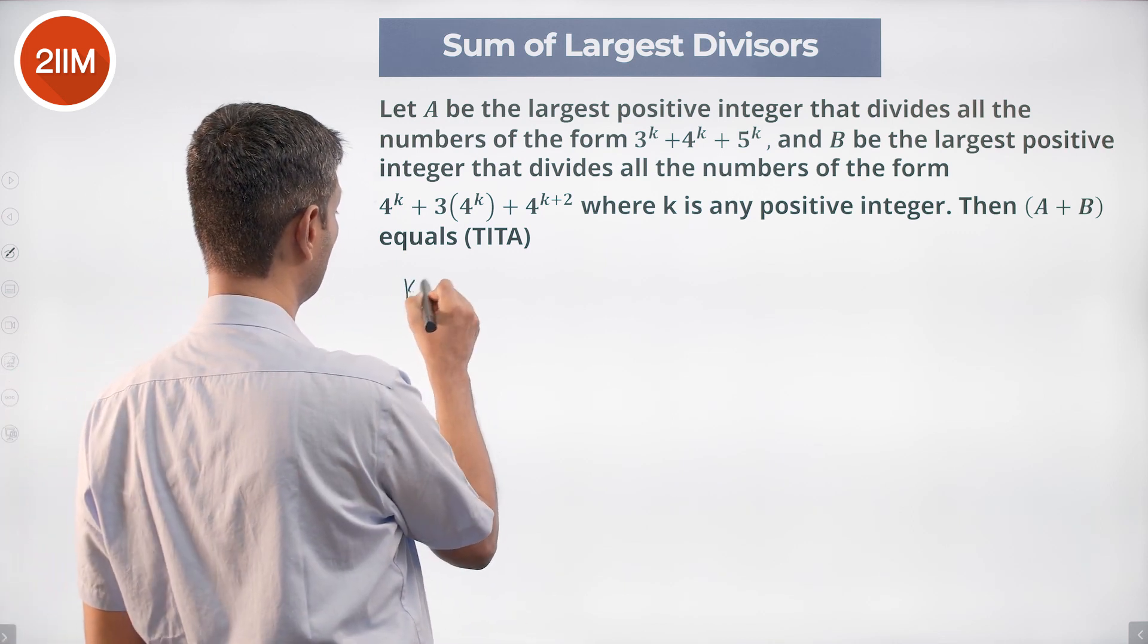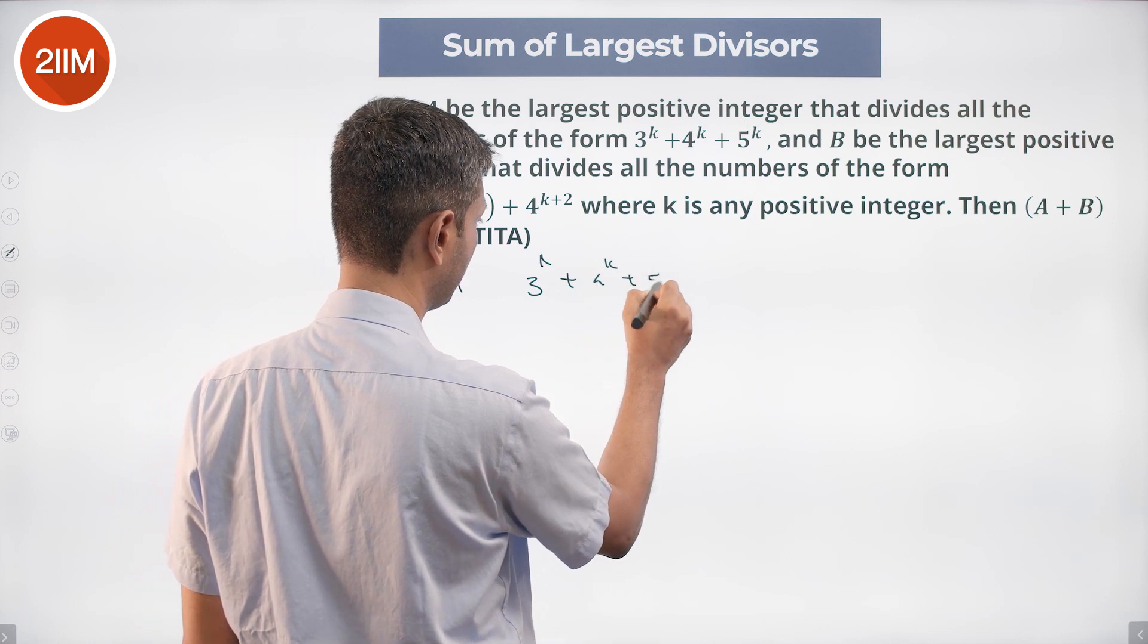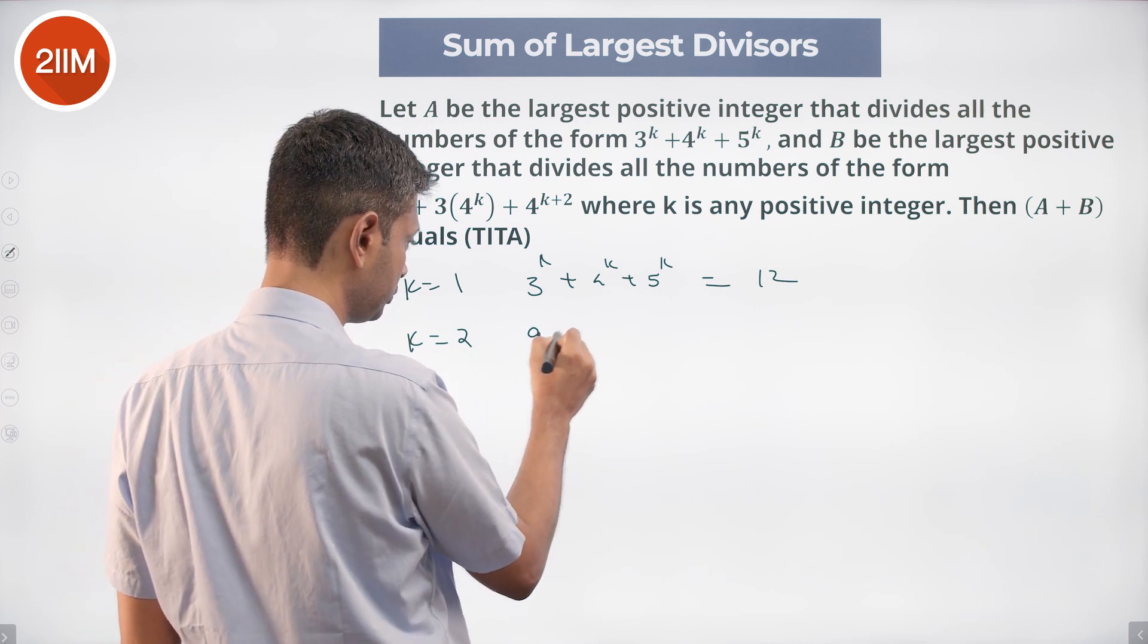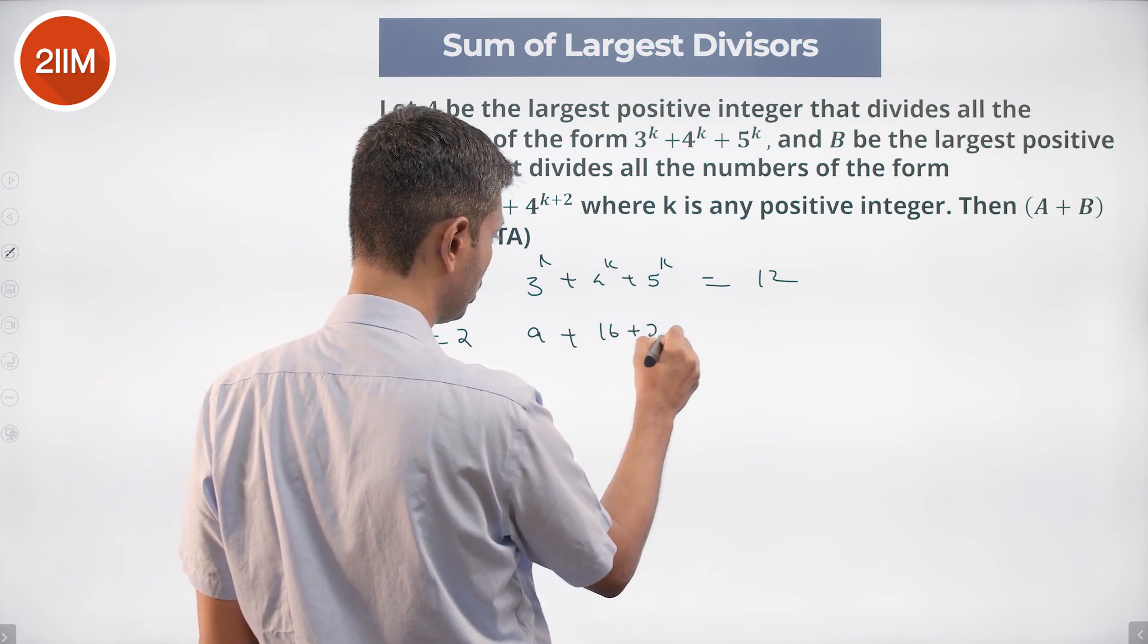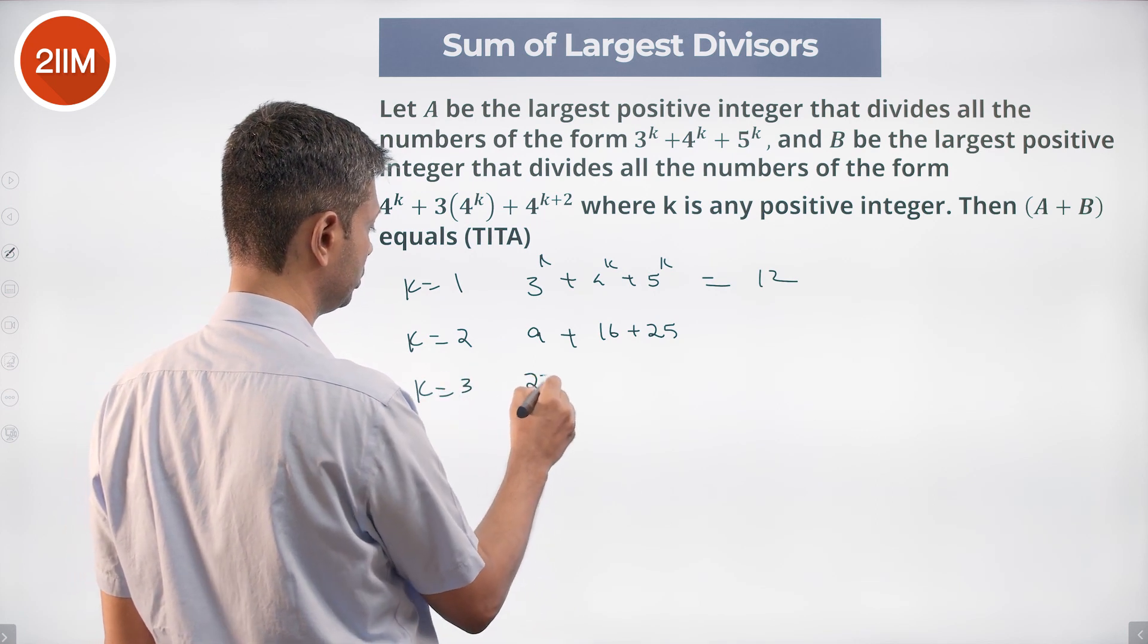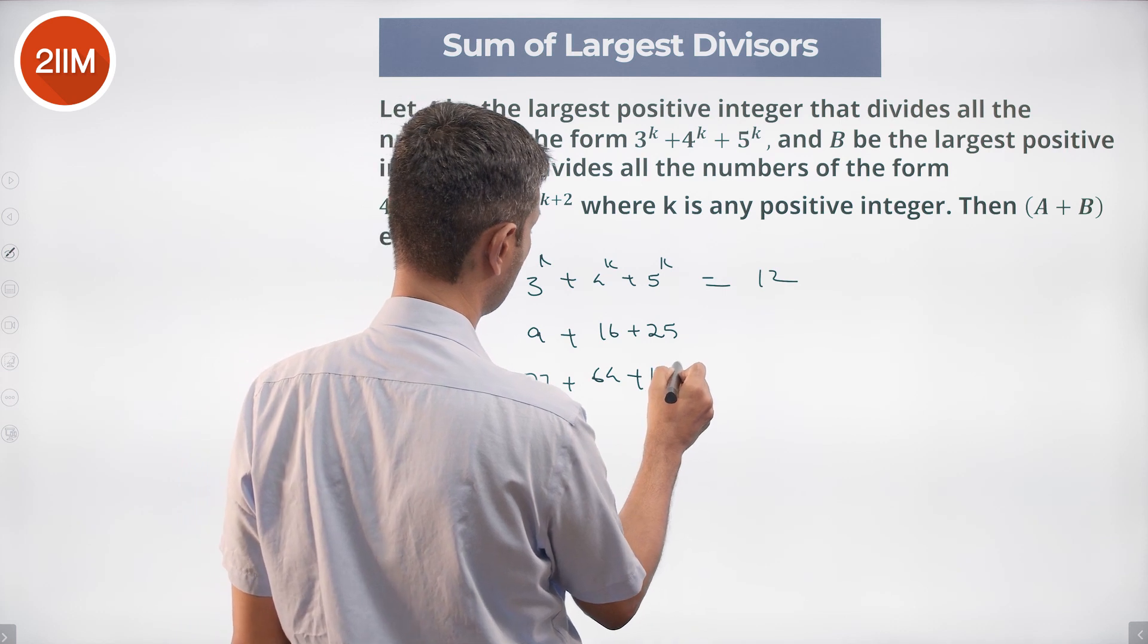We say we put k equal to 1 and we find 3^k + 4^k + 5^k, so 3 + 4 + 5 is 12. K equal to 2: 9, 16, 25. K equal to 3: 27 + 64 + 125.